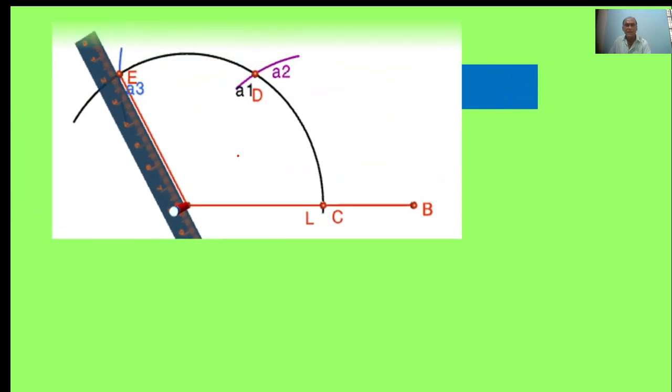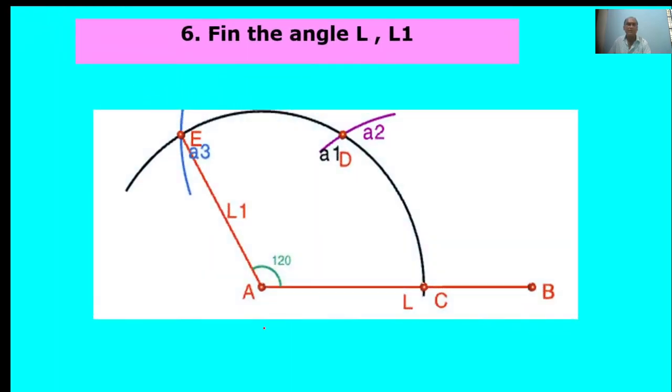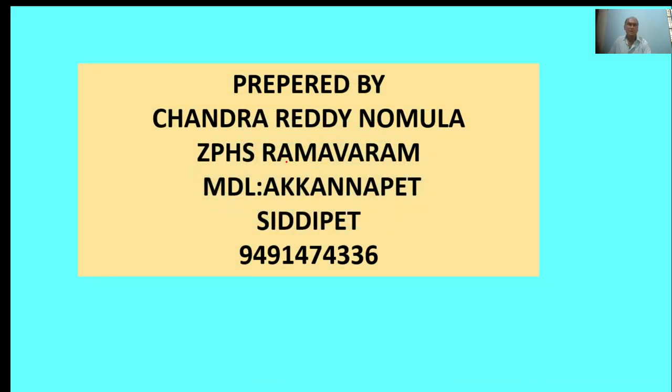Join E and A. Here, the angle is 120 degrees. Find the angle. It is called 120 degrees. Prepared by Chandra D. Nomala.